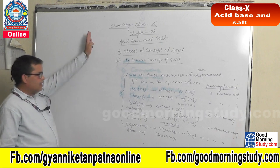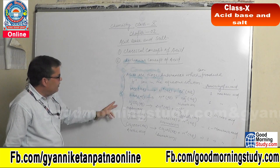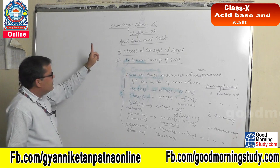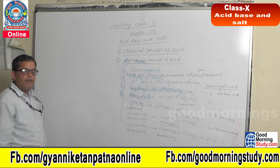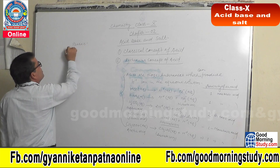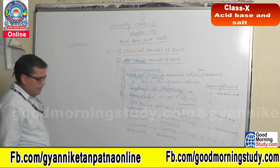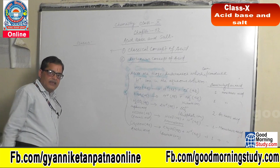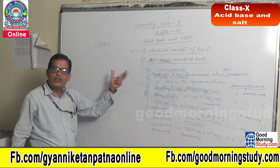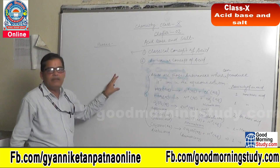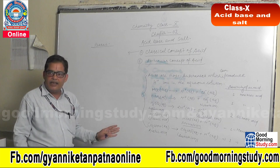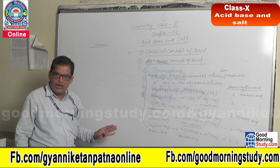Now, there are two definitions: the classical concept and the Arrhenius concept. Similarly, there are two concepts of bases — the classical concept of bases, which are all depending upon the physical and chemical characteristics of the base. I will discuss that later on. I hope that all the points are clear in this video. Thank you very much. I will see you again.